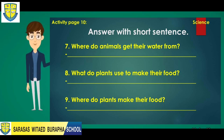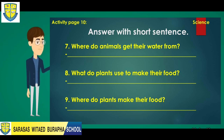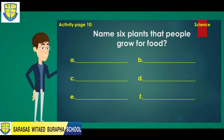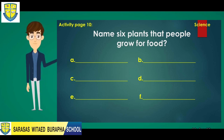Number 8: What do plants use to make their food? Number 9: Where do plants make their food? Number 10: This question is still on page 10 — name 6 plants that people grow for food. Write your answers on the space provided below.